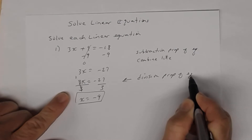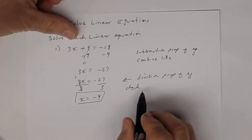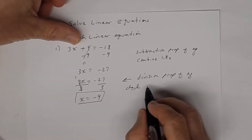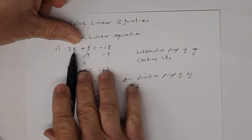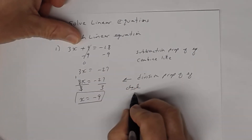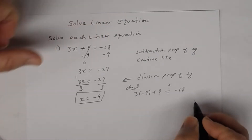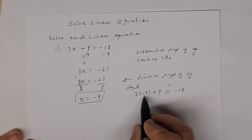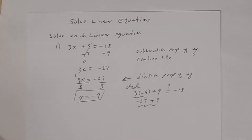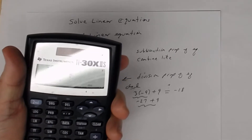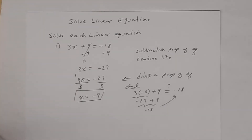Step five is to check your answer — you may not always have time on a timed test. To check, go back to the original equation and substitute x = -9. You get 3(-9) + 9. Using order of operations, multiply first: 3 times -9 is -27. Then -27 + 9 = -18, which equals the right side. That confirms our solution.